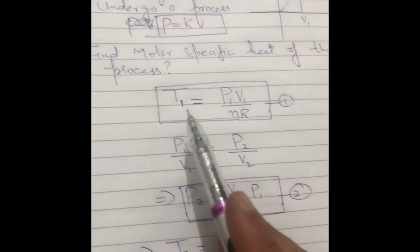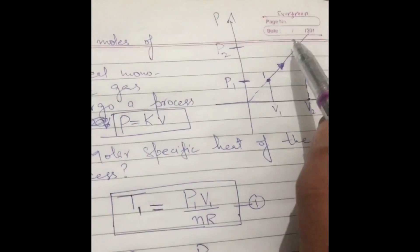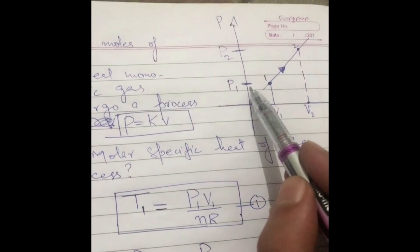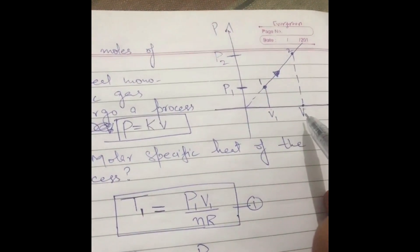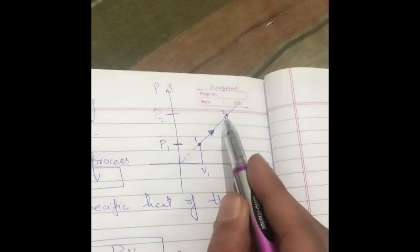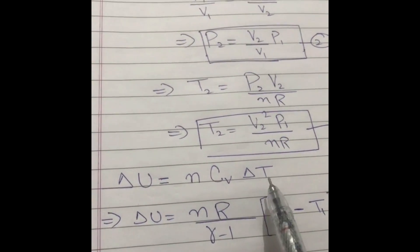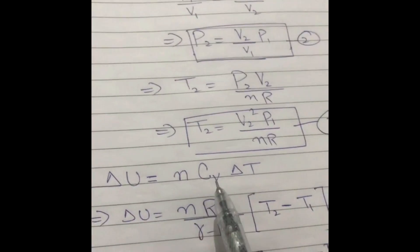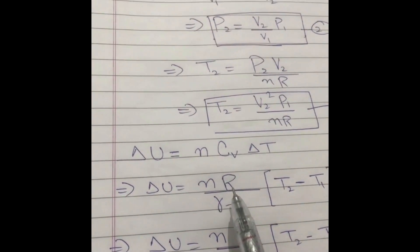Now I know the full state at point 1 — pressure, volume, number of moles, and temperature — and at point 2 — pressure, volume, number of moles n, and temperature. Now let's find how much the internal energy changes when the system goes from state 1 to state 2. The equation for change in internal energy is: delta U = n·Cv·delta T, which holds for every process.